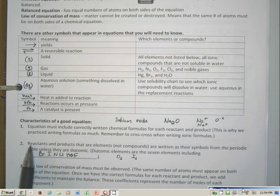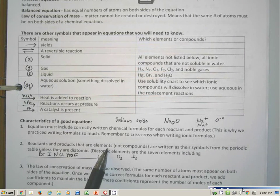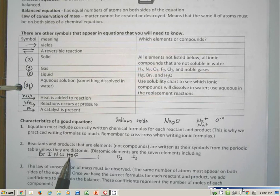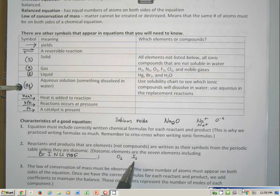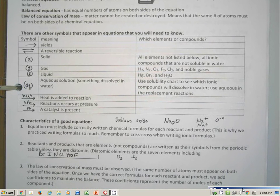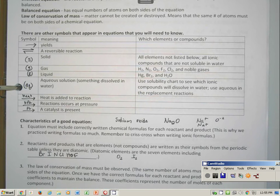Remember that anything that's an element, you just write its symbol straight off the periodic table, unless it's a part of Brinkelhoff, in which case you will write them diatomically. You will write them as two. And then last but not least is that in order to write a good equation, you have to balance it. You have to obey the law of conservation of mass, and there's going to be a separate video on that in order to do balancing.